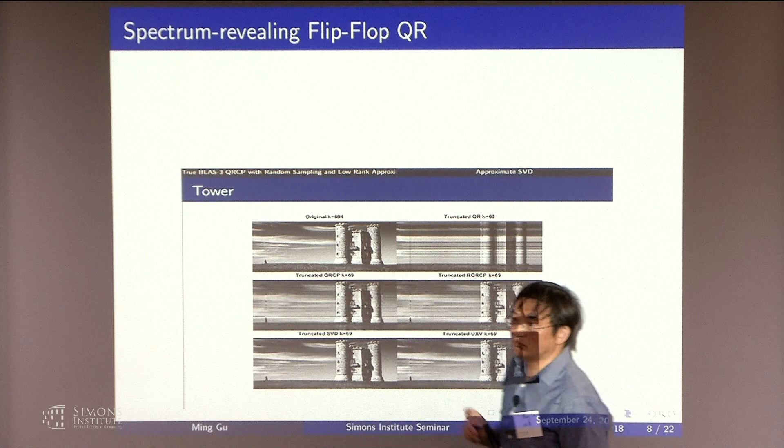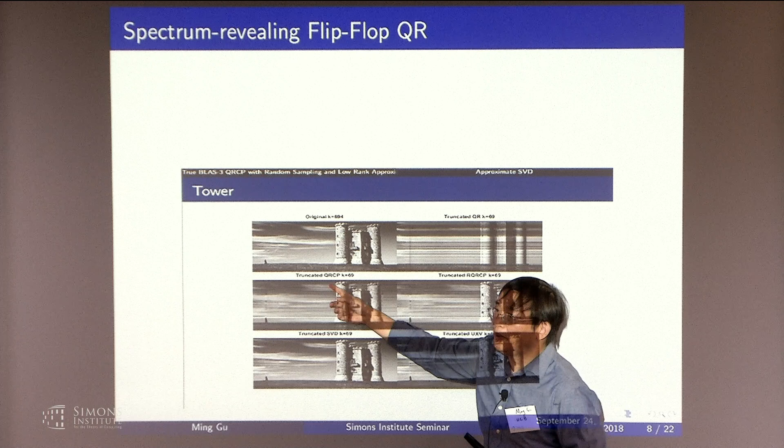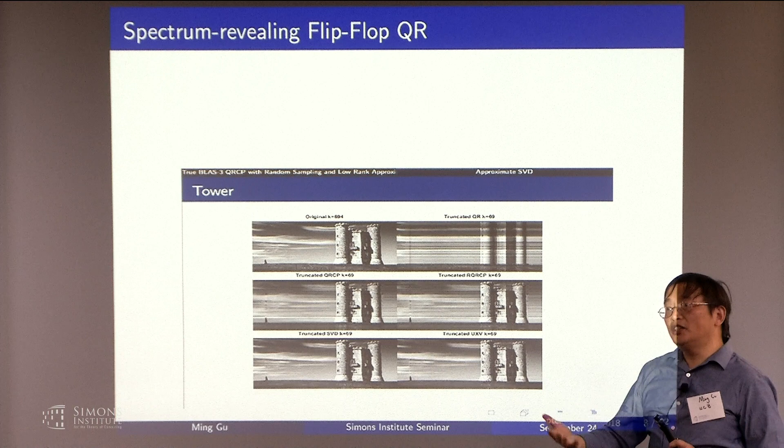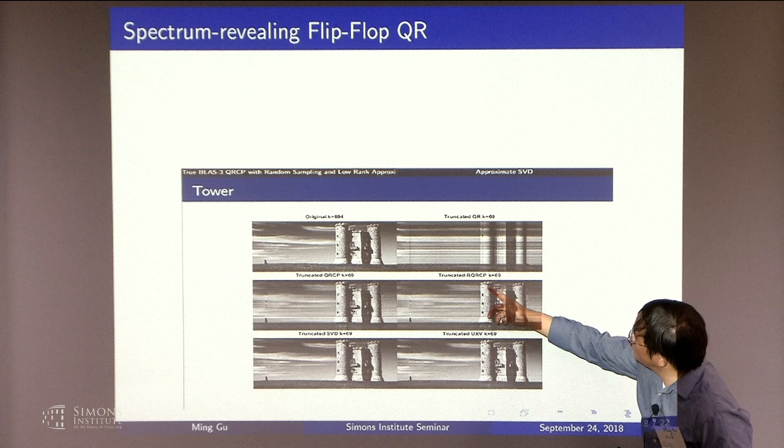Typically if you do QR with the column pivoting, it's a very slow operation. But if you do a randomized QR with the column pivoting, you will get a result that's as good numerically, but it will be at a fraction of the original speed. And as you can see, this randomized version looks just like this one. But still, you see the smearing.